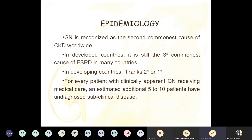Glomerulonephritis is recognized as the second most common chronic kidney disease worldwide. In developed countries it is the third most common cause of end-stage renal disease, whereas in developing countries it is first or second. For every patient with clinically apparent glomerulonephritis, there are an additional 5 to 10 patients with subclinical, undiagnosed disease.